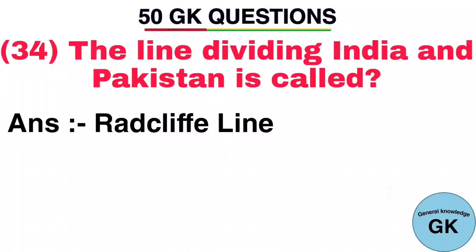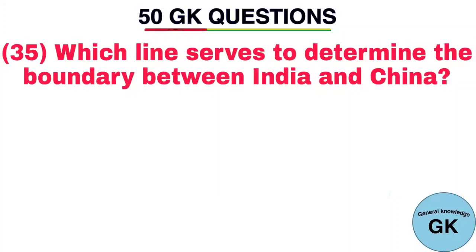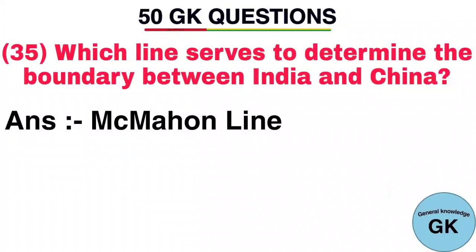Question number 35. Which line serves to determine the boundary between India and China? Answer: MacMahon Line.